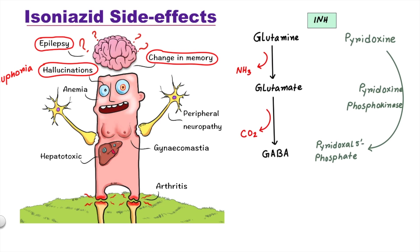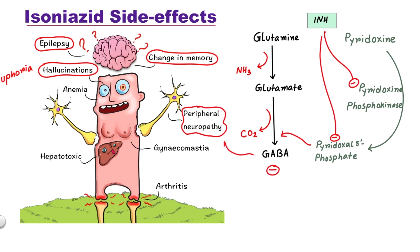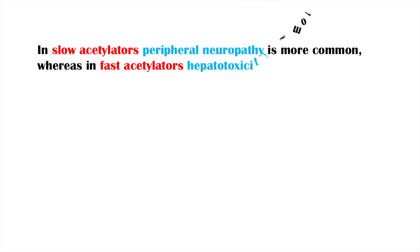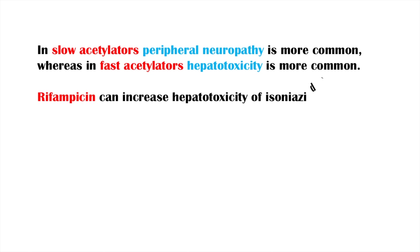One of the most important side effects is peripheral neuropathy. Isoniazid inhibits pyridoxine phosphokinase, which is required to convert pyridoxine to pyridoxal-5-phosphate. Isoniazid also directly inhibits pyridoxal-5-phosphate. Since pyridoxal-5-phosphate is required for GABA synthesis, isoniazid inhibits the synthesis of the inhibitory neurotransmitter GABA (gamma-aminobutyric acid). In slow acetylators, peripheral neuropathy is more common, whereas in fast acetylators, hepatotoxicity is more common. Rifampicin can increase the hepatotoxicity of isoniazid.